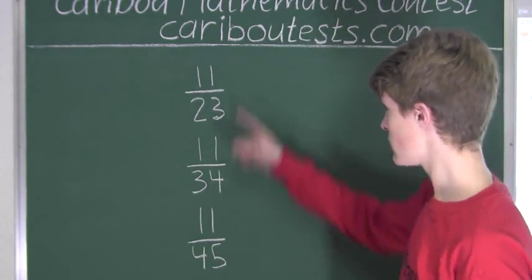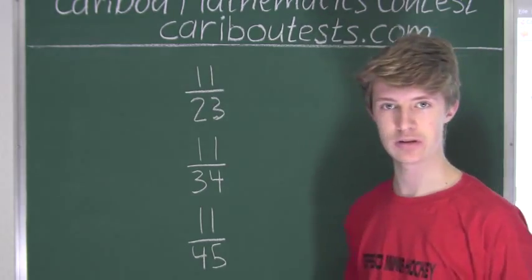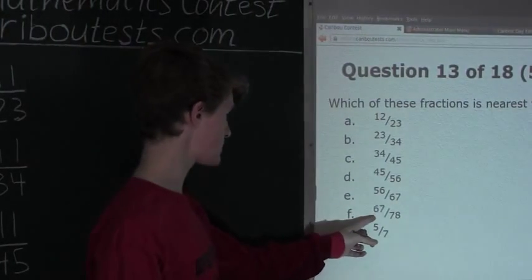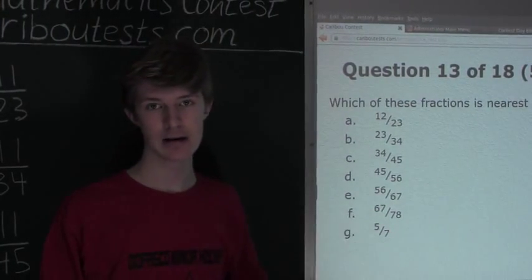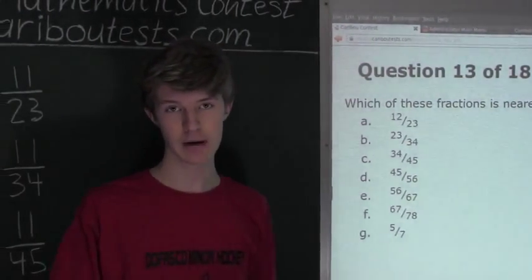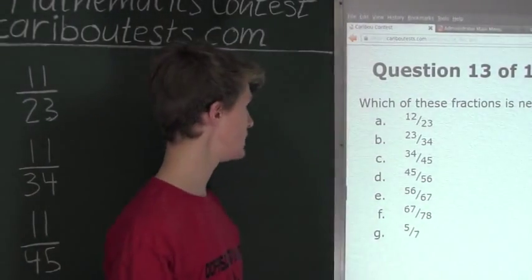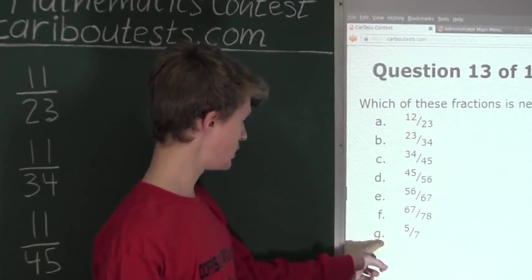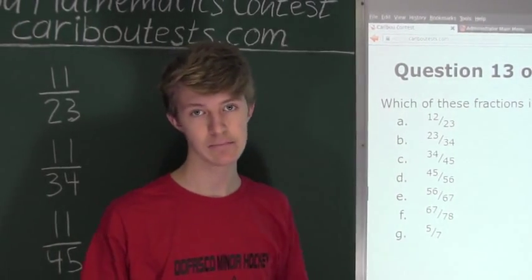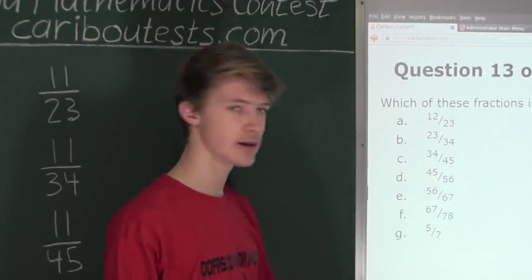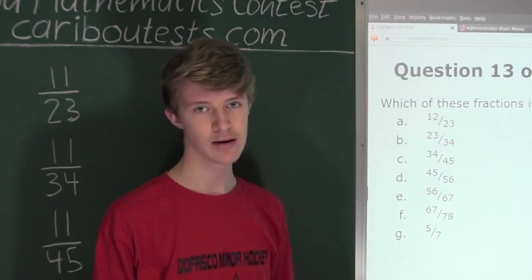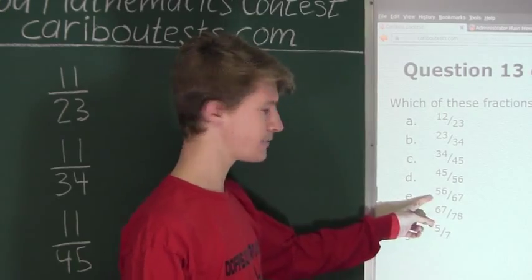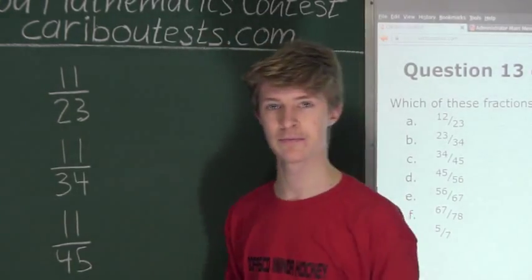Since we know the differences are getting smaller and smaller, the last fraction we used, which is 67 over 78, must have the biggest value and therefore must be nearest to 1. Now all we need to look at is G, 5 over 7, and see if that's bigger than 67 over 78. Now let's compare 5 over 7 to 56 over 67.